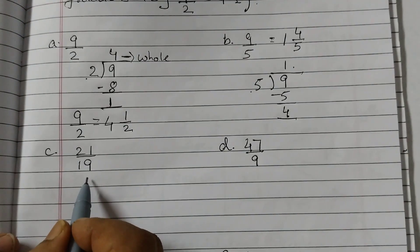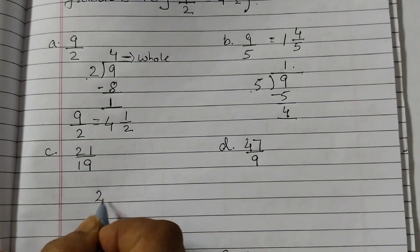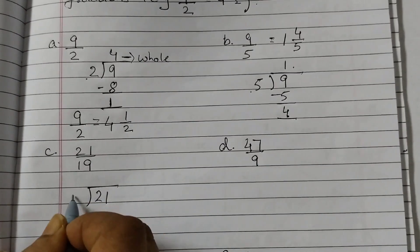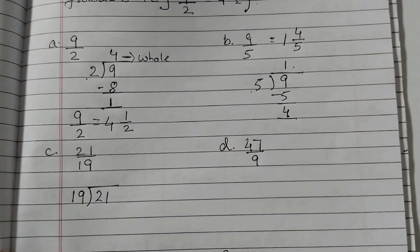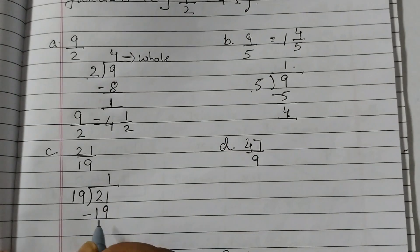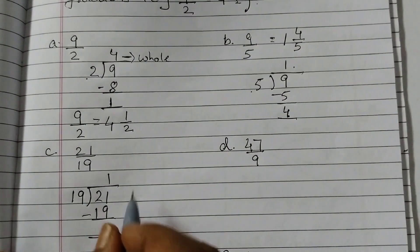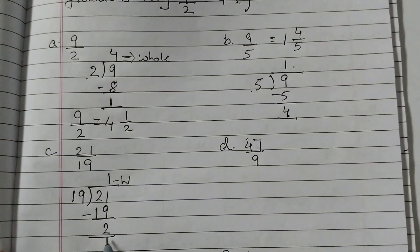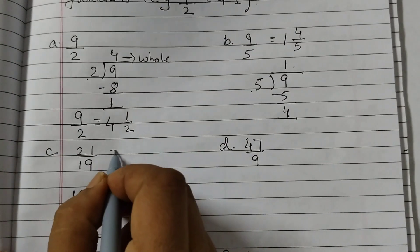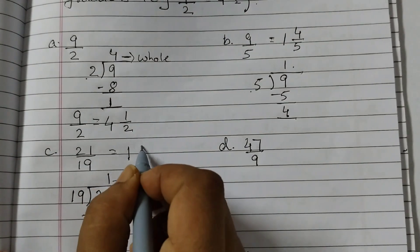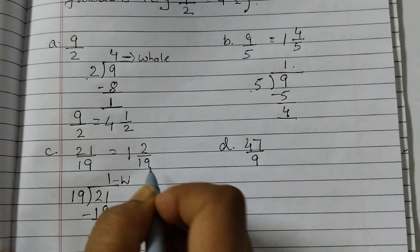C, 21 upon 19. So 21 inside, 19 outside. 19 ones are 19, 21 minus 19 is 2. So this is the whole and then 2 upon 19, so answer is 1 whole and 2 upon 19.